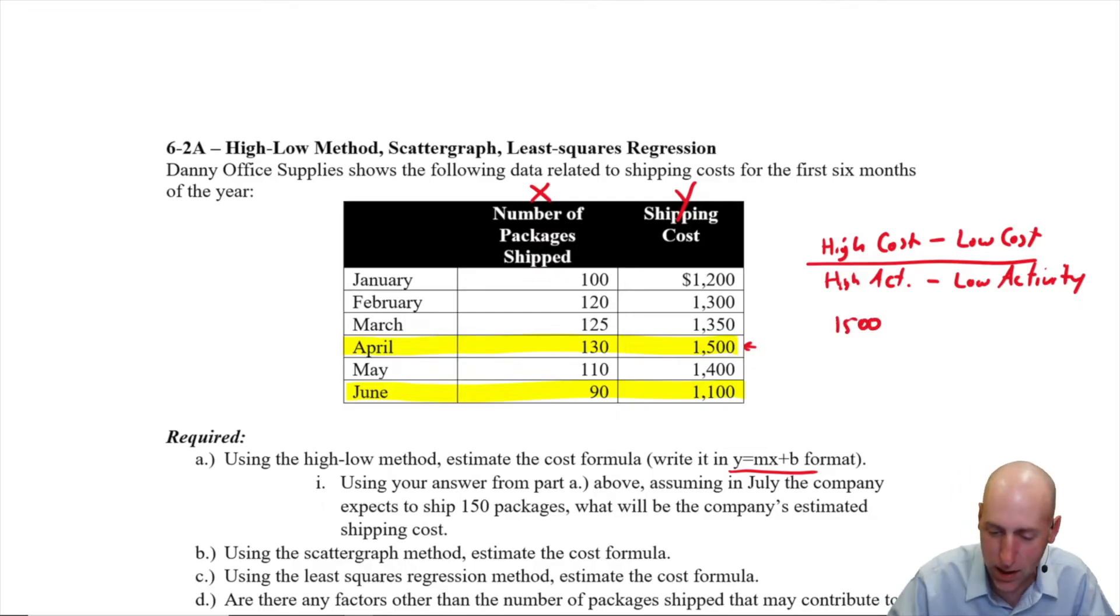Shipping cost in April was $1,500. Our lowest activity level, the cost in that month was $1,100. For activity, we're going to take 130 minus 90. So I get 400 over 40. Okay, this is going to be some pretty easy math even I can do. It's 10.